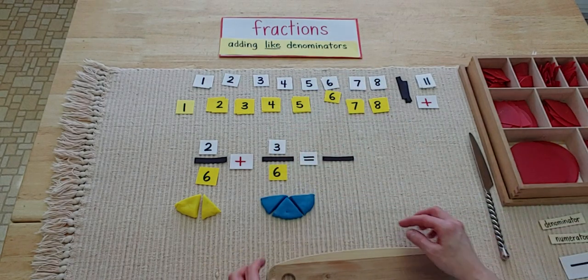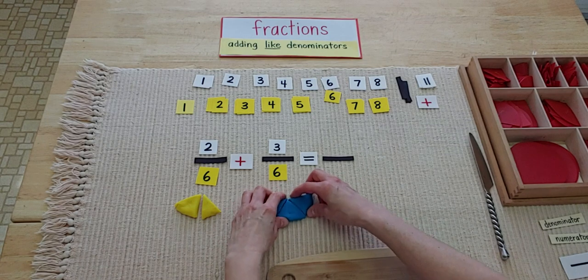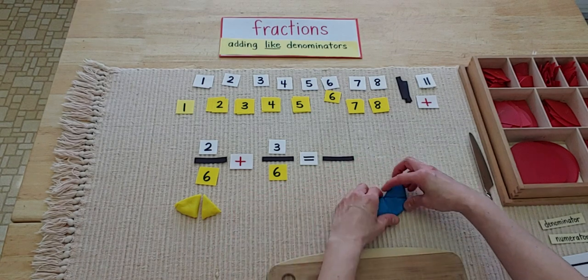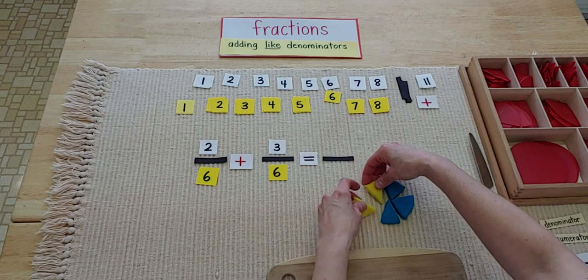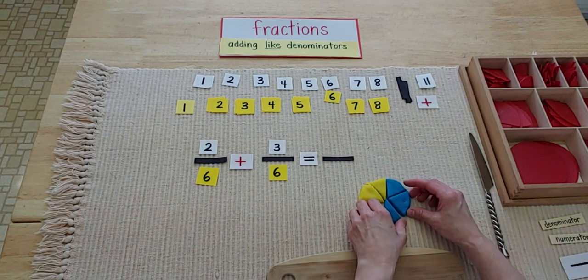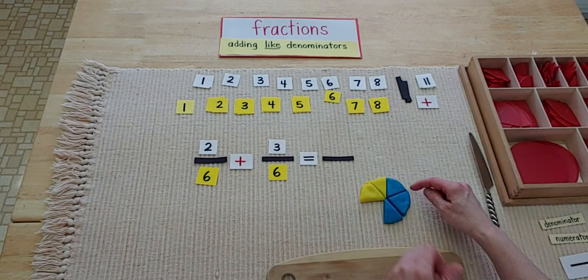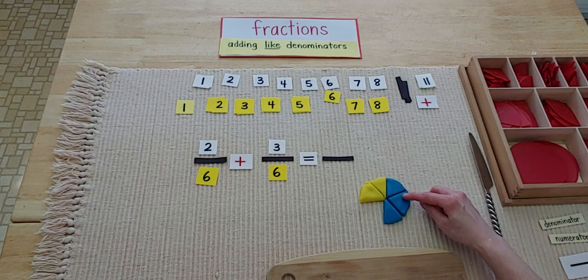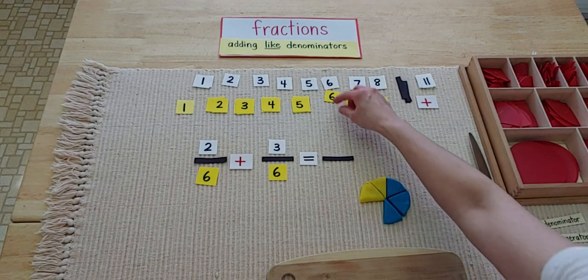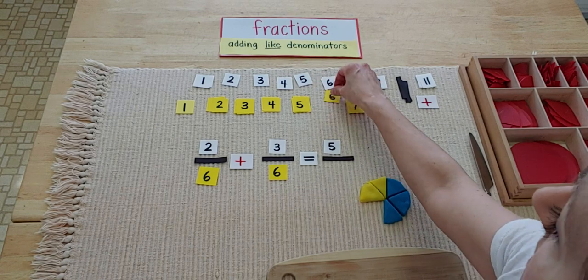Now, here comes the fun part. We're going to mix these pies together. Ready? I'm going to slide it over. And when we add things together, that means we're putting them together. I'm going to count up all the slices together. One, two, three, four, five. Five sixths.